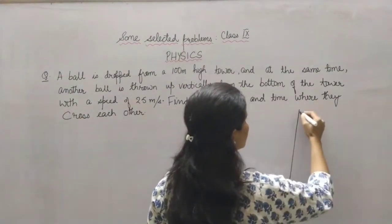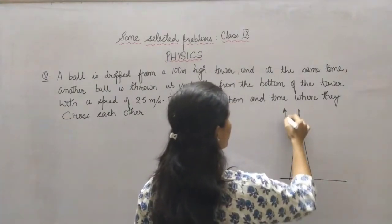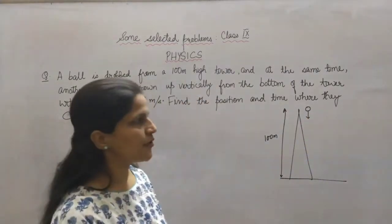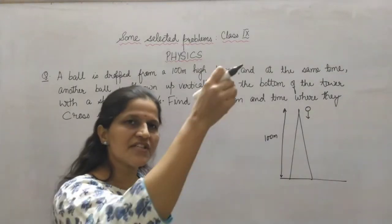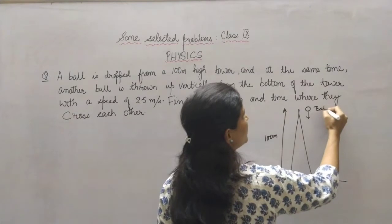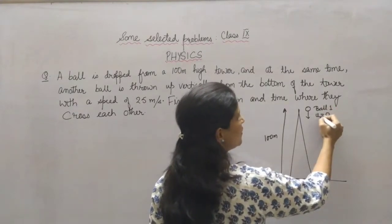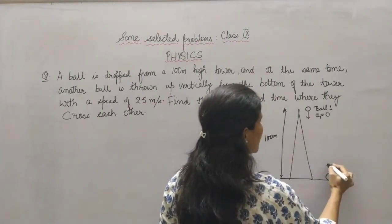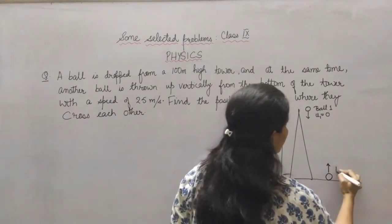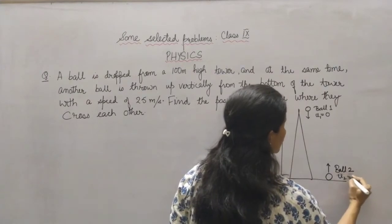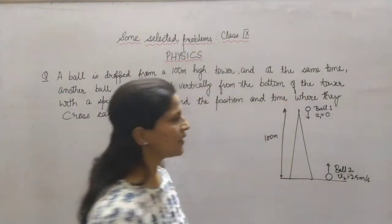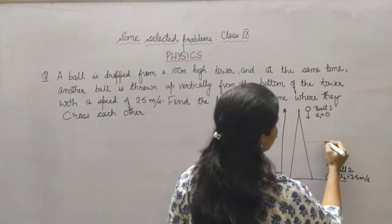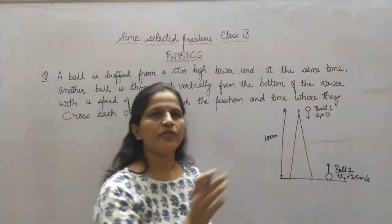According to the question, the situation is as follows. There is a 100 meter high tower, and from the top a ball is dropped down. Dropping means you are not giving any initial velocity to the ball — you are just letting it go. So ball 1 has initial velocity U1 = 0. The second ball is thrown up vertically with an initial velocity of 25 meter per second. The question asks at what point will they cross each other. There are two ways to solve this: using vector notations, and using scalar equations.